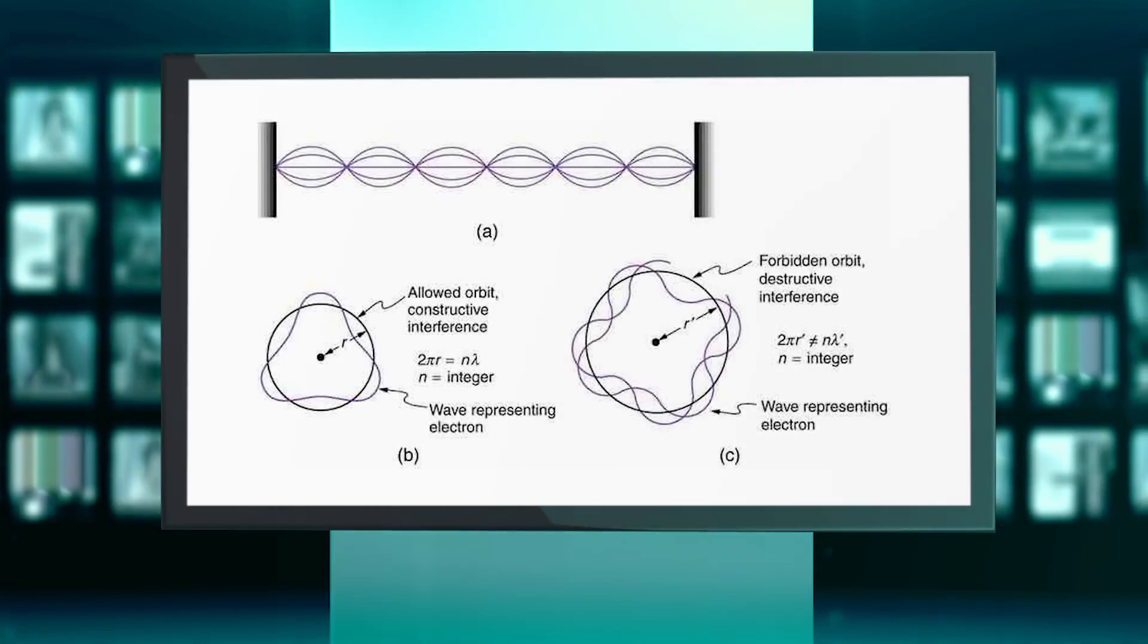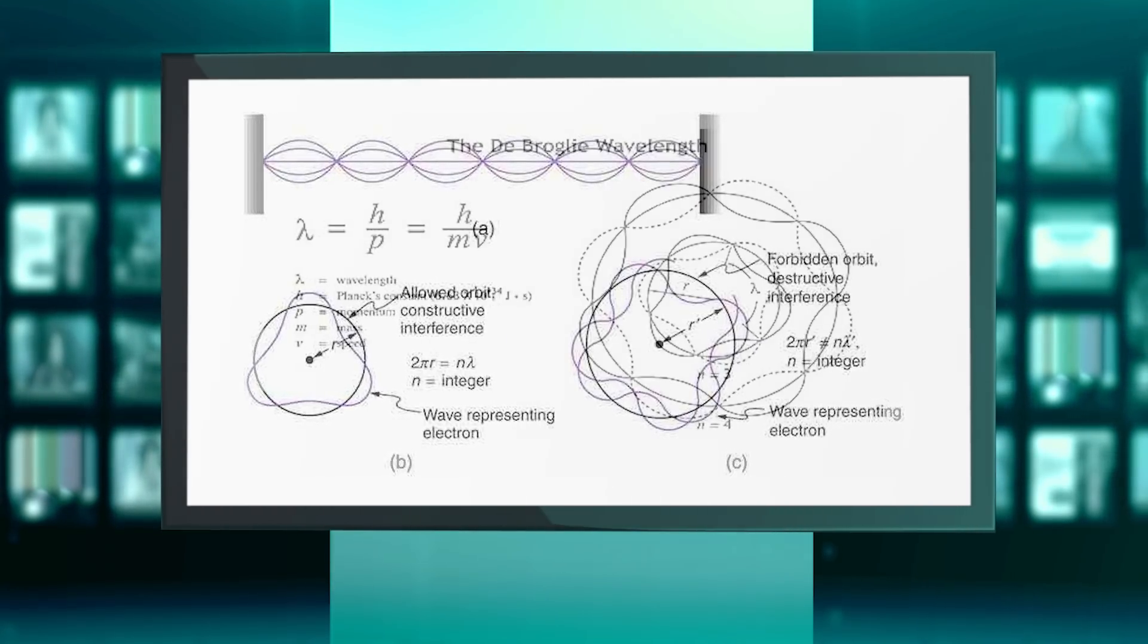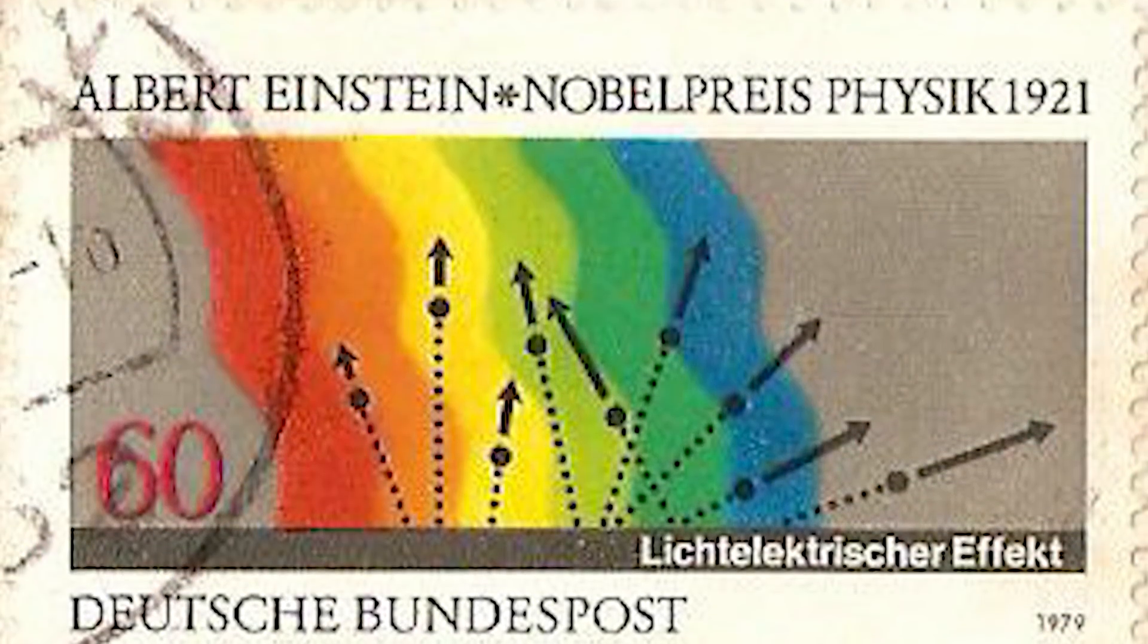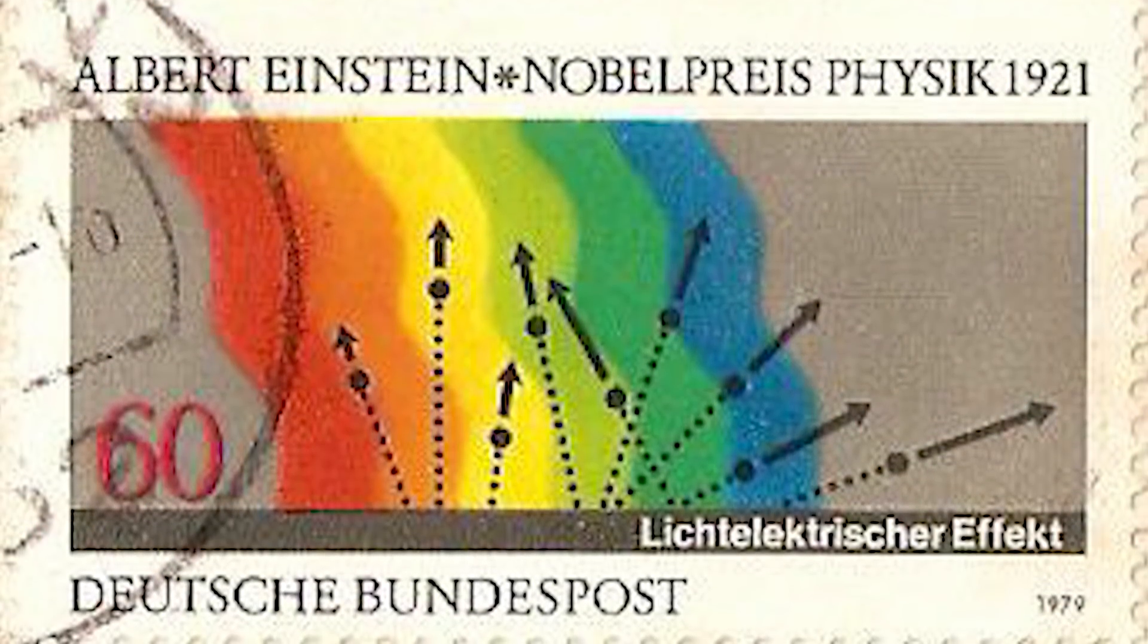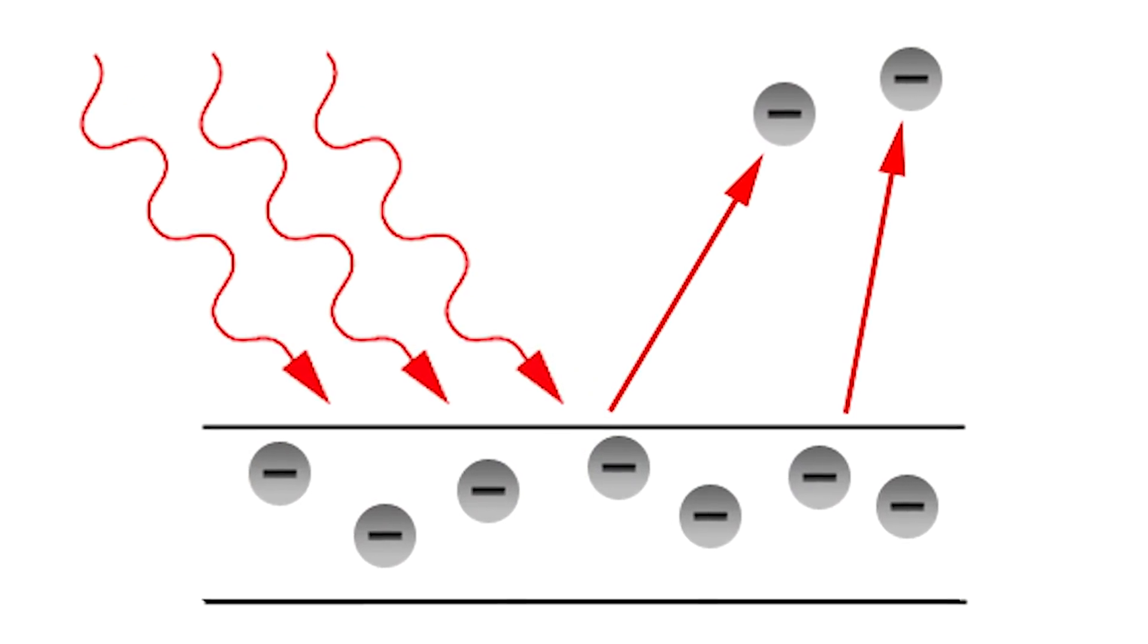Experiments done on electrons showed that they behave like a wave upon passing through very narrow slits, a behavior seen for light also. Albert Einstein successfully explained the photoelectric effect mentioned before by invoking the particle nature of light. In that experiment, light will behave like small particles, photons.